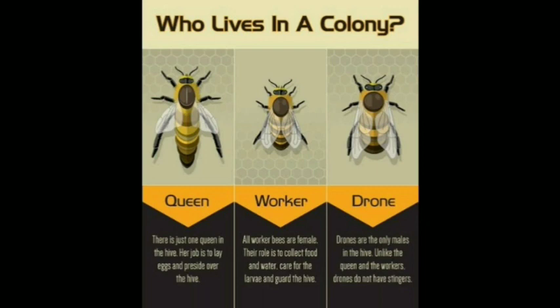The worker bees are all female. Their role is to collect food and water, care for the larvae, and guard the hive — mostly engaged in housekeeping, maintaining the hive and looking after the larvae. The drones are the only males in the hive. Unlike the queen and the workers, drones do not have stingers. So the queen and the worker can sting you, but the drones, being male, never sting.